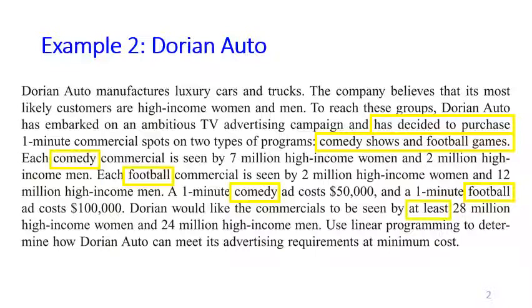And then when you see words like at least, at most, only, or such things like that, it usually gives you the clue about constraints. So here you can see that Dorian would like the commercials to be seen by at least 28 million high-income women, and so on.